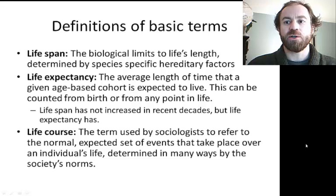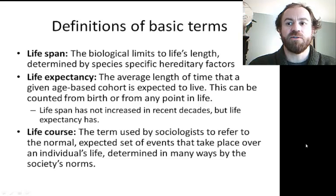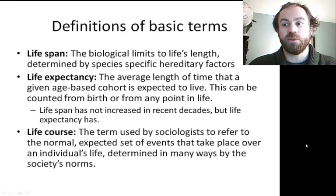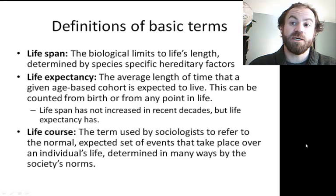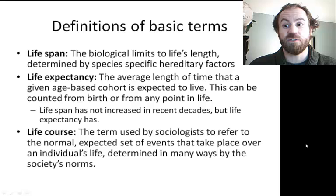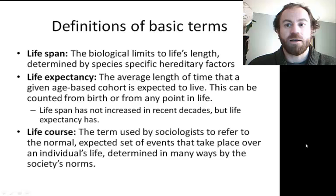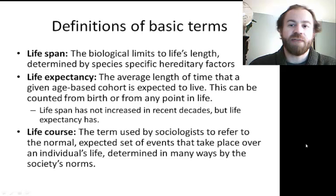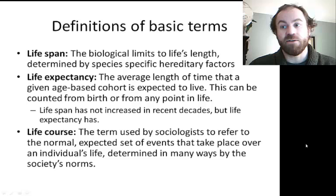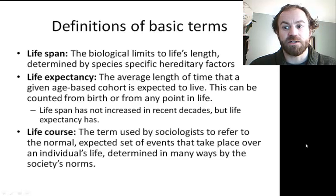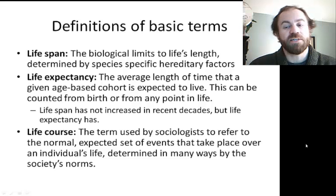Here are some basic vocabulary terms. Lifespan refers to the biological limits of life — we do not know any given individual's lifespan since the time of death is unknown, but we do know the lifespan of any given species. Life expectancy is the average predicted life of an organism in a given environment. The human lifespan has not increased in recent decades — we're still basically the same — but life expectancy has, due to changes in the environment: better sanitation, healthier diet, greater access to health care.